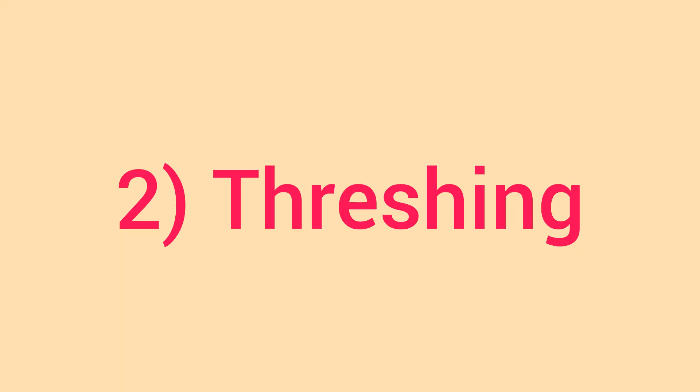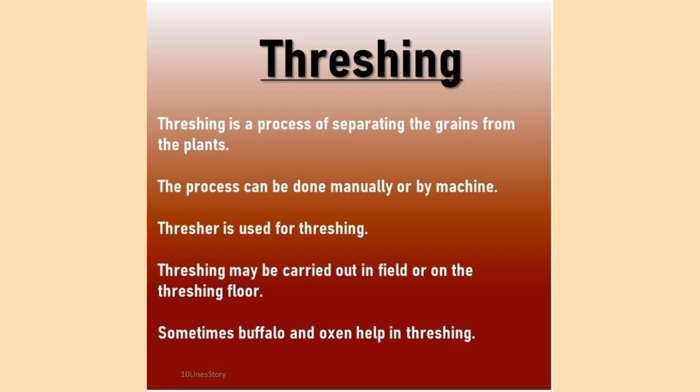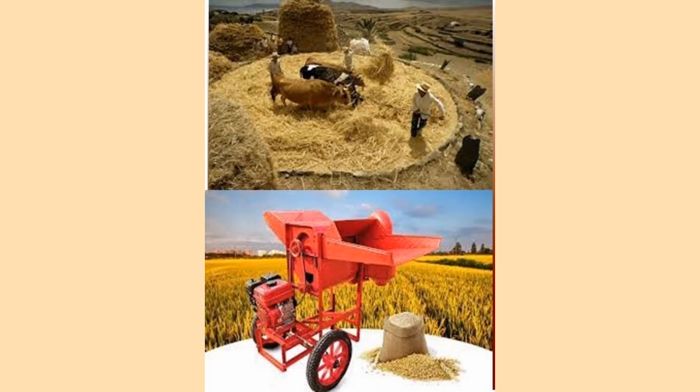The next method is threshing. Threshing is the process of separating grains from the stalk by beating. The grains are weakly attached to the stalk and each stalk has many grain seeds attached to it. Threshing is done with the help of bullocks. Machines are also used to thresh.